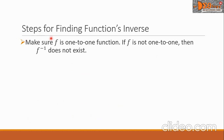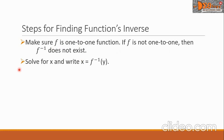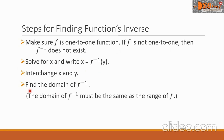These are the steps for finding a function's inverse. Step 1: Make sure the given function is a one-to-one function. If f is not one-to-one, then f inverse does not exist. Step 2: Solve for x and write x equals f inverse of y. Step 3: Interchange x and y. Step 4: Find the domain of f inverse — it must be the same as the range of f.